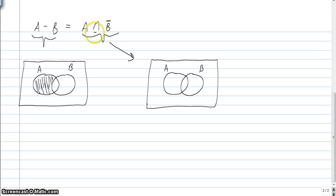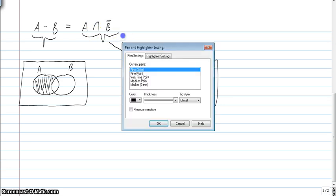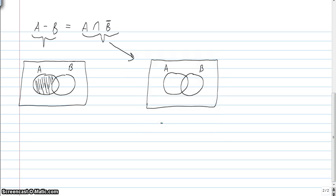So A union with B complement, right. So again we might go ahead and shade in B complement so we can see that. The complement, I'm sorry I said that wrong. I think I said A union B complement, should be A intersect B complement.